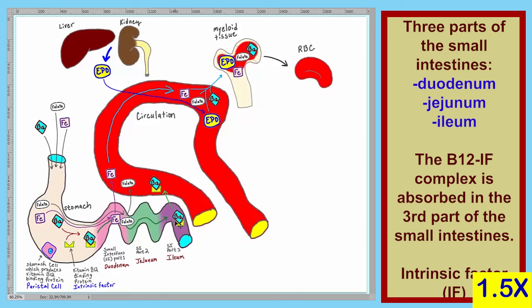The vitamin B12-intrinsic factor complex is absorbed into circulation. These three components then travel through circulation into the myeloid tissue. The liver and the kidneys produce erythropoietin, which enters circulation and also travels into the myeloid tissue. These components, along with the myeloid tissue, undergo the process of erythropoiesis to produce our red blood cells.